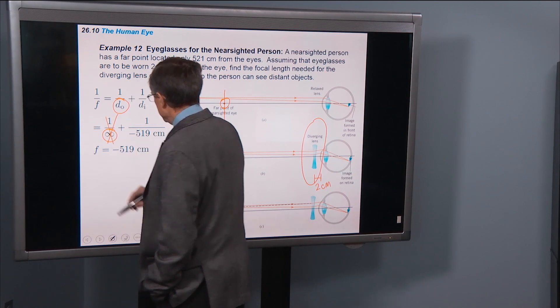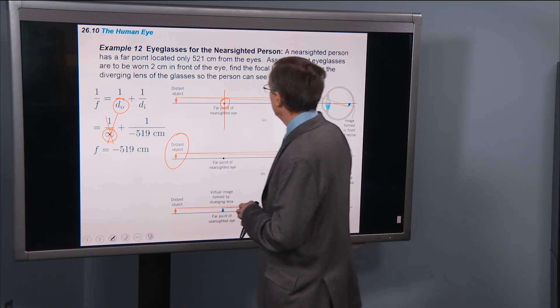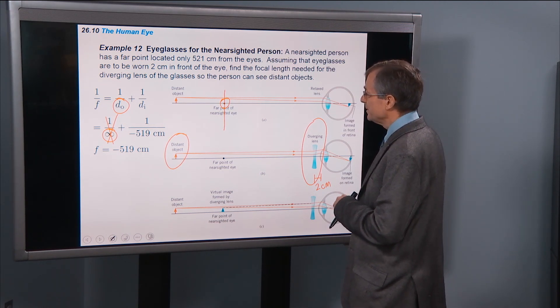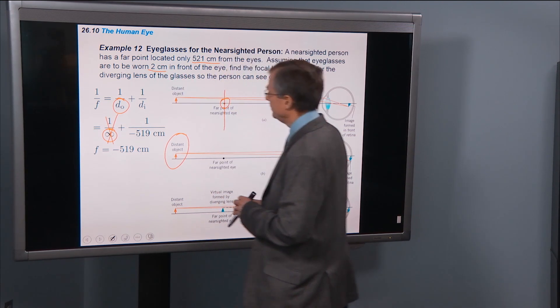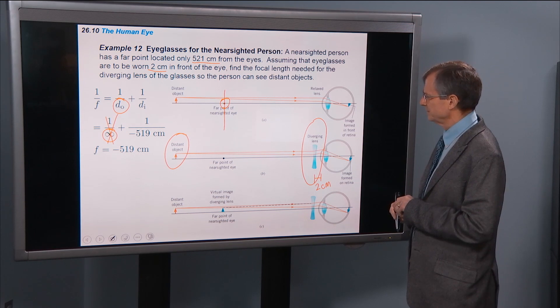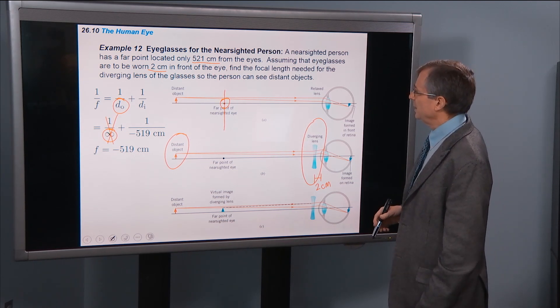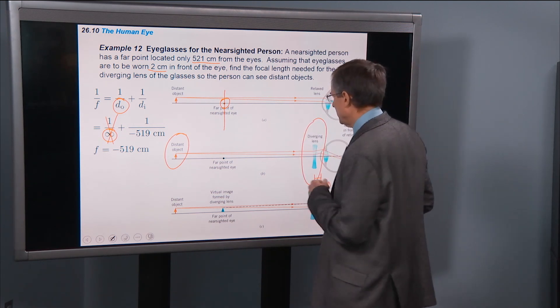So this guy just gets killed. And the 519 centimeters is the difference between this 521 centimeters and the 2 centimeters in front of the eye, which is the, let's see if we've got that right, the, okay, so the far point is 521 centimeters from the eye. So that's from here to here.